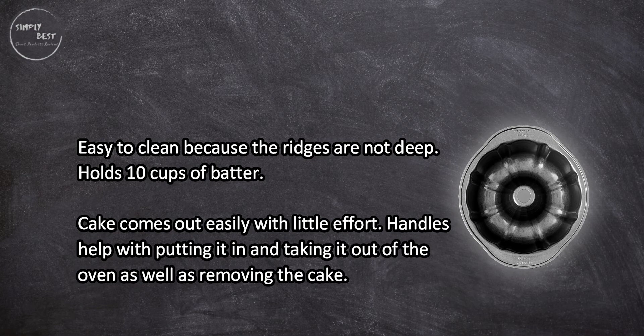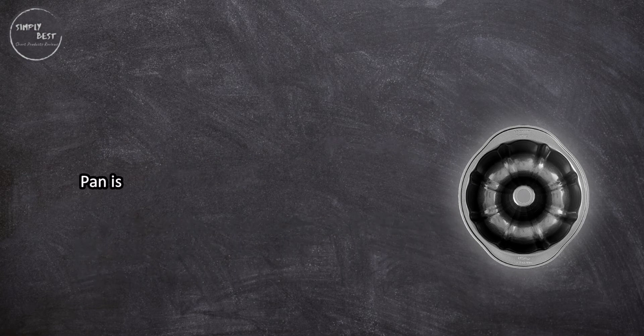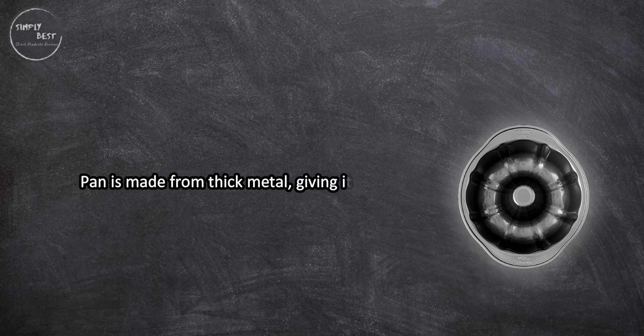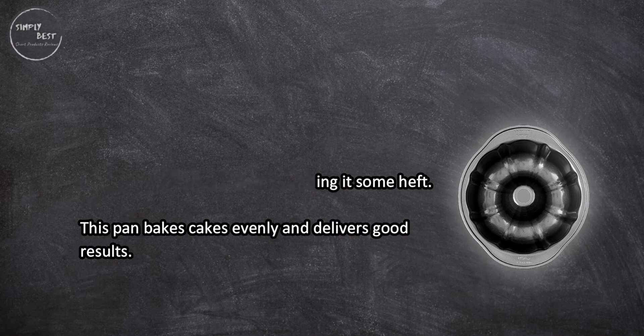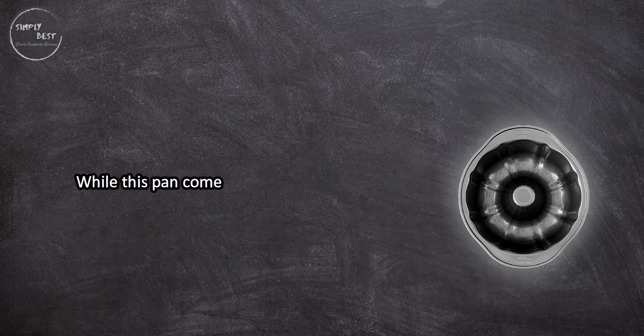Pan is made from thick metal giving it some heft. This pan bakes cakes evenly and delivers good results. While this pan comes with a 10-year warranty, it can get nicks in the nonstick coating over time which will rust and make the pan unusable.